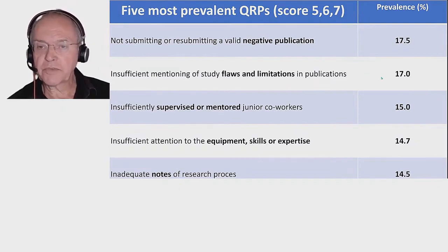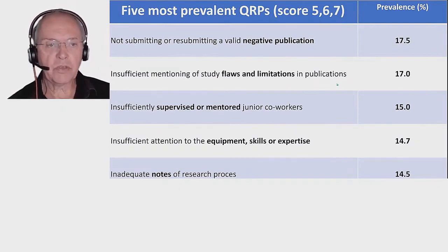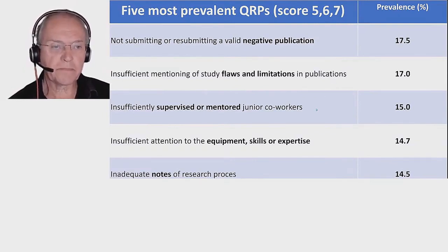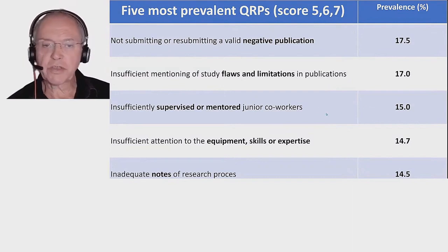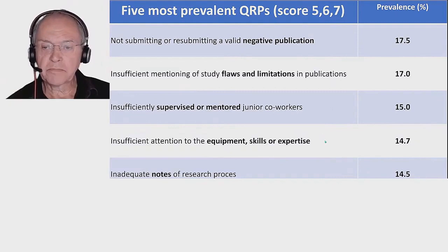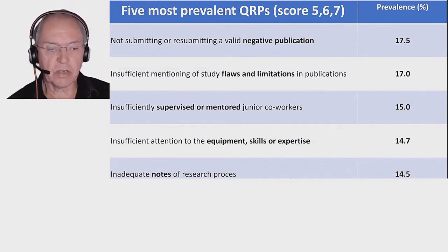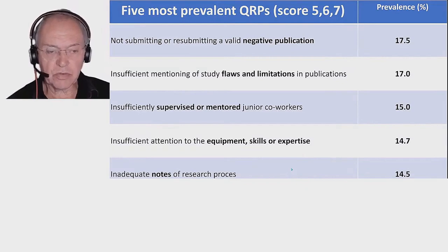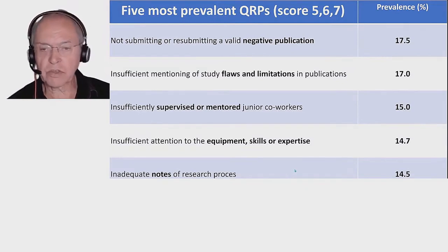70% said they do not always mention all important flaws and limitations in their publications. 50% admitted to not supervising and mentoring their junior co-workers, like PhD students, sufficiently. A lack of equipment skills and expertise was admitted by about 50%, and also a little bit less than 50% said that they did not take completely adequate notes of the research process.